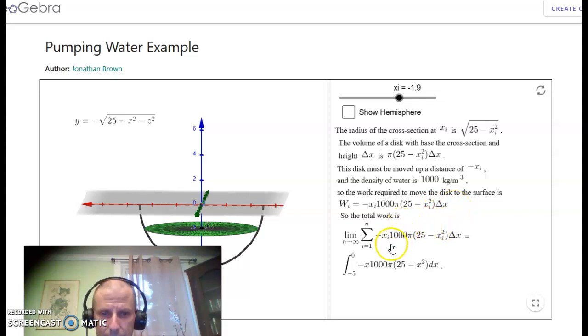The total work we get is by taking the limit as n goes to infinity of the sum from i equals 1 to n of minus x_i times 1,000 pi times 25 minus x_i squared times delta x, which we can now easily turn into a definite integral. That is equal to the integral from minus 5 to 0 of minus x times 1,000 pi times 25 minus x squared dx.